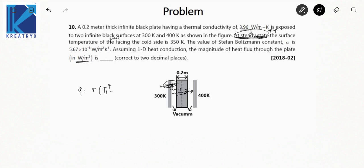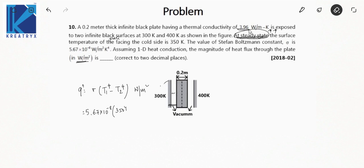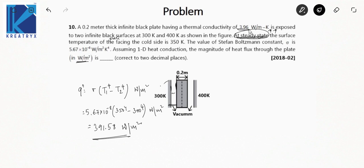So q equals sigma times (T1^4 minus T2^4), since it is vacuum and heat transfer takes place only by radiation. Putting values: 5.67 × 10^-8 × (350^4 − 300^4). Here T1 is 350 Kelvin (the plate surface facing cold side) and T2 is 300 Kelvin (the cold black surface). Solving this, the answer is 391.58 Watt per meter square. That was the key word — steady state.